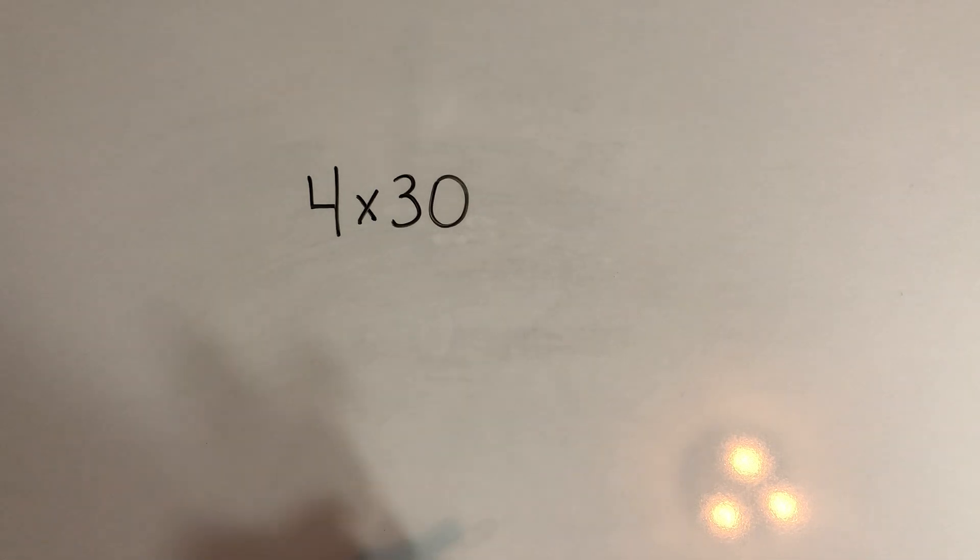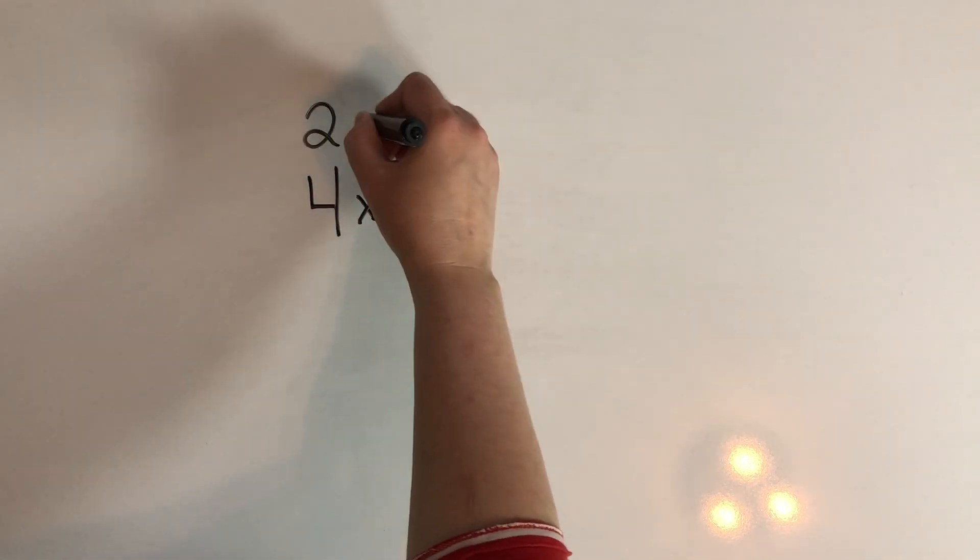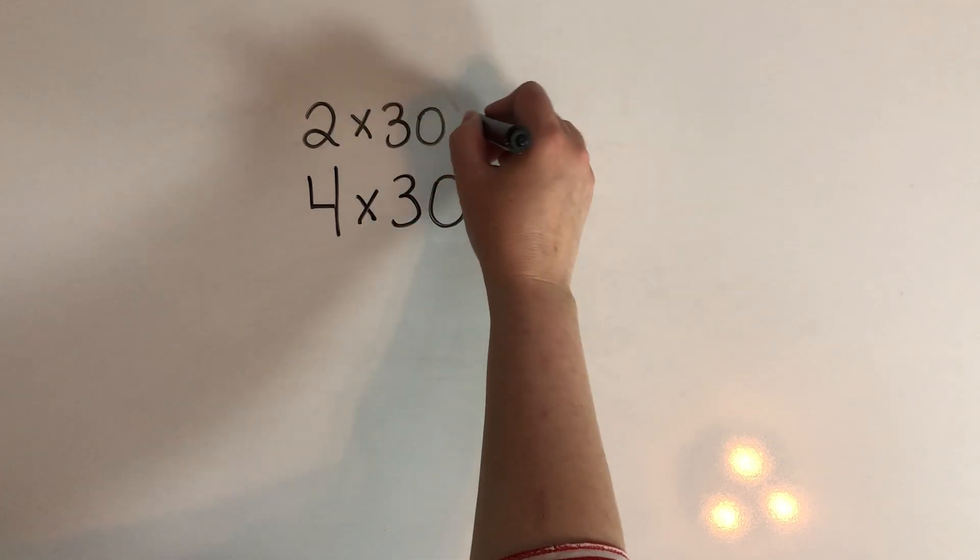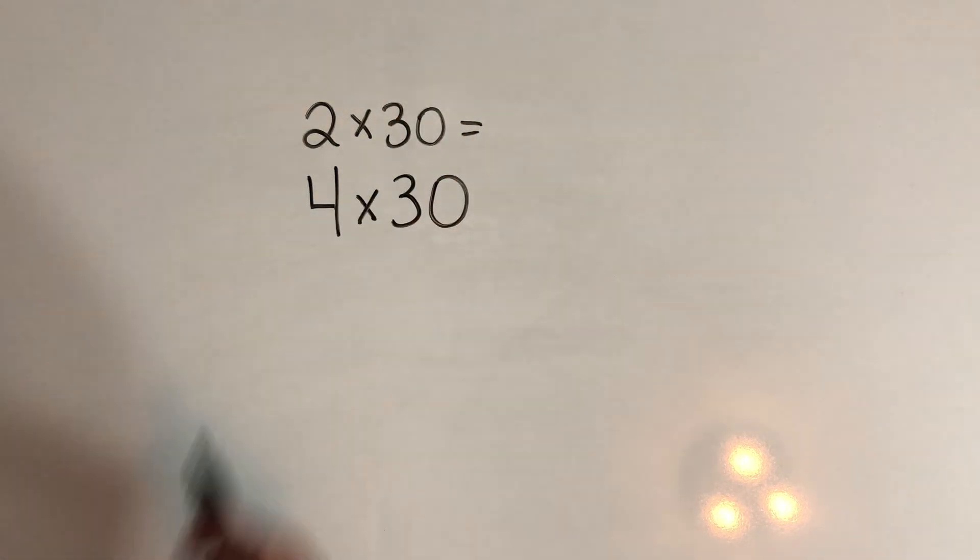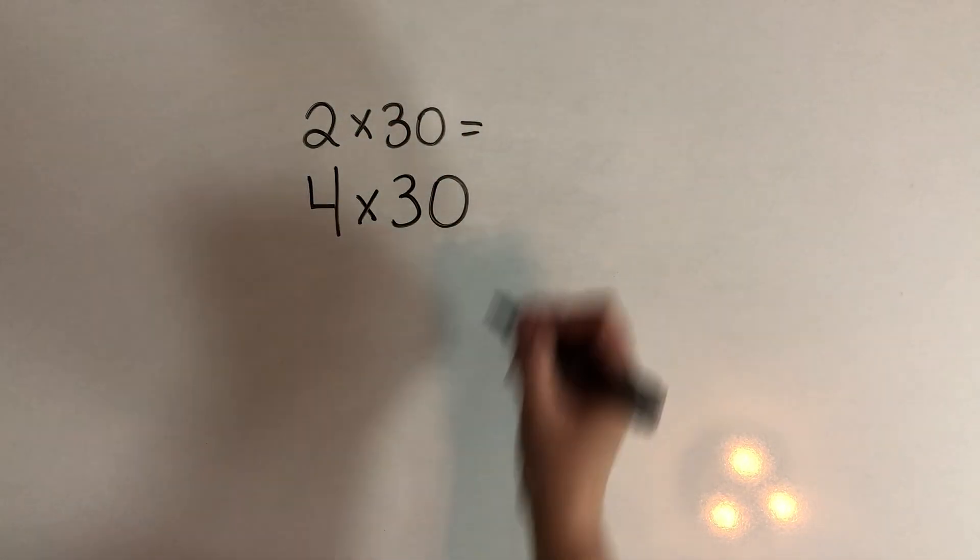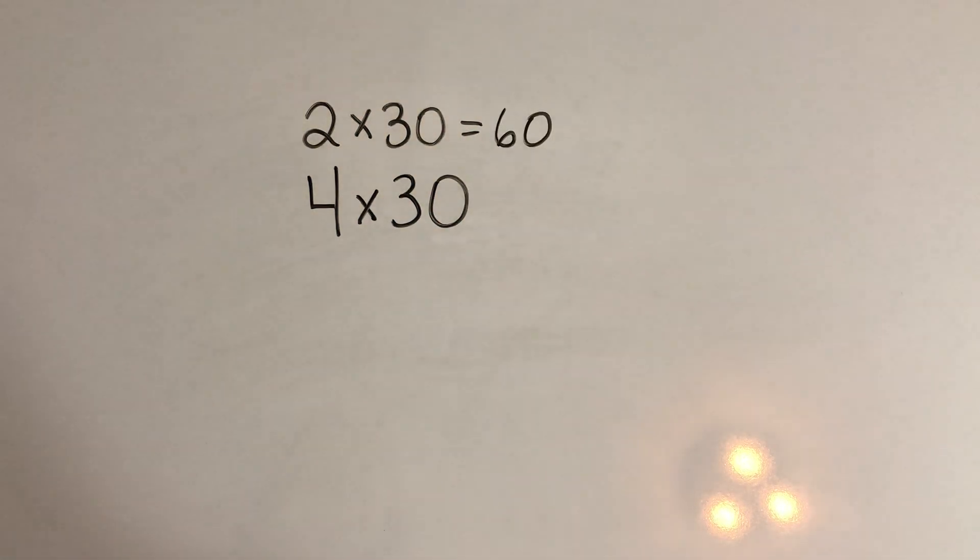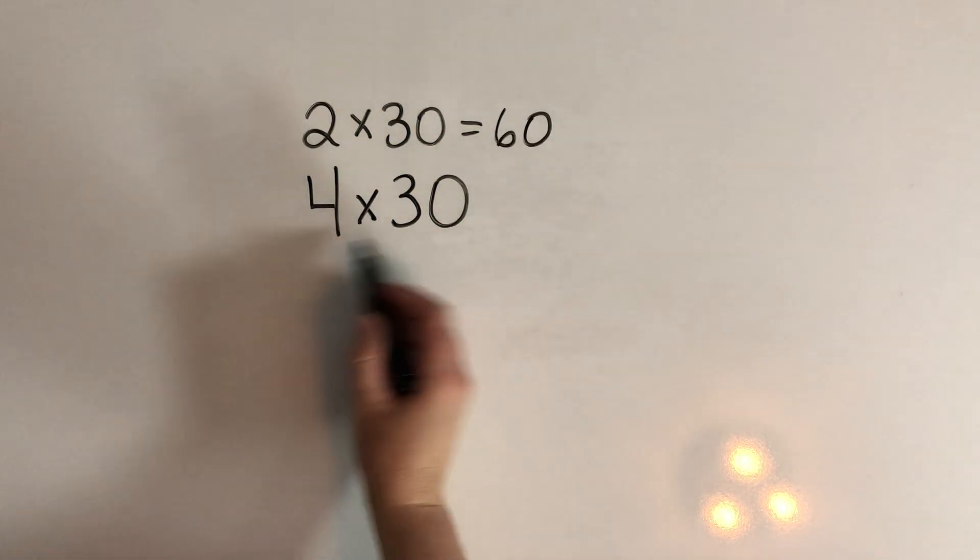Okay, so let's start with two times thirty. What's two groups of thirty? That makes sixty. And now we have four groups of thirty.